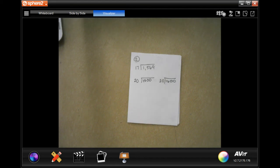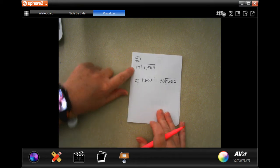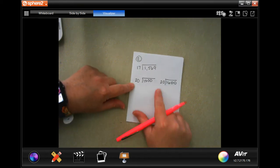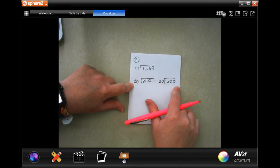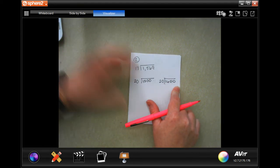We are going to start where it wants you to do an estimate first. I want you to do two estimates with compatible numbers. So 17, I would round that to 20 on both of them. And 1569 is between 1500 and 1600.